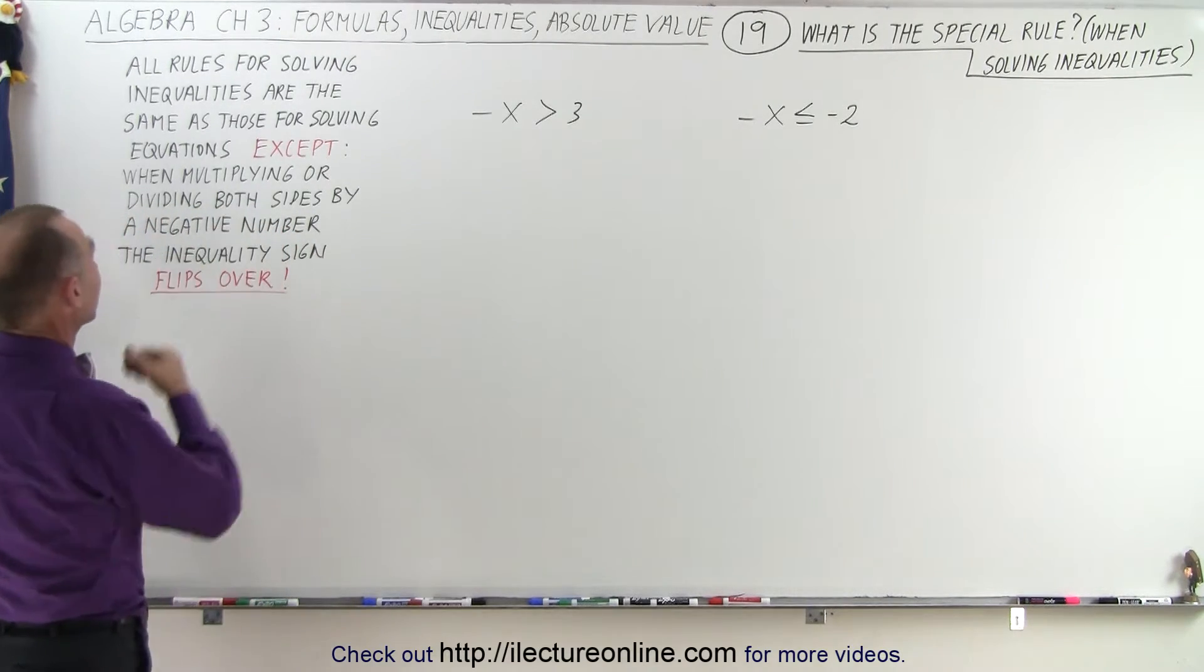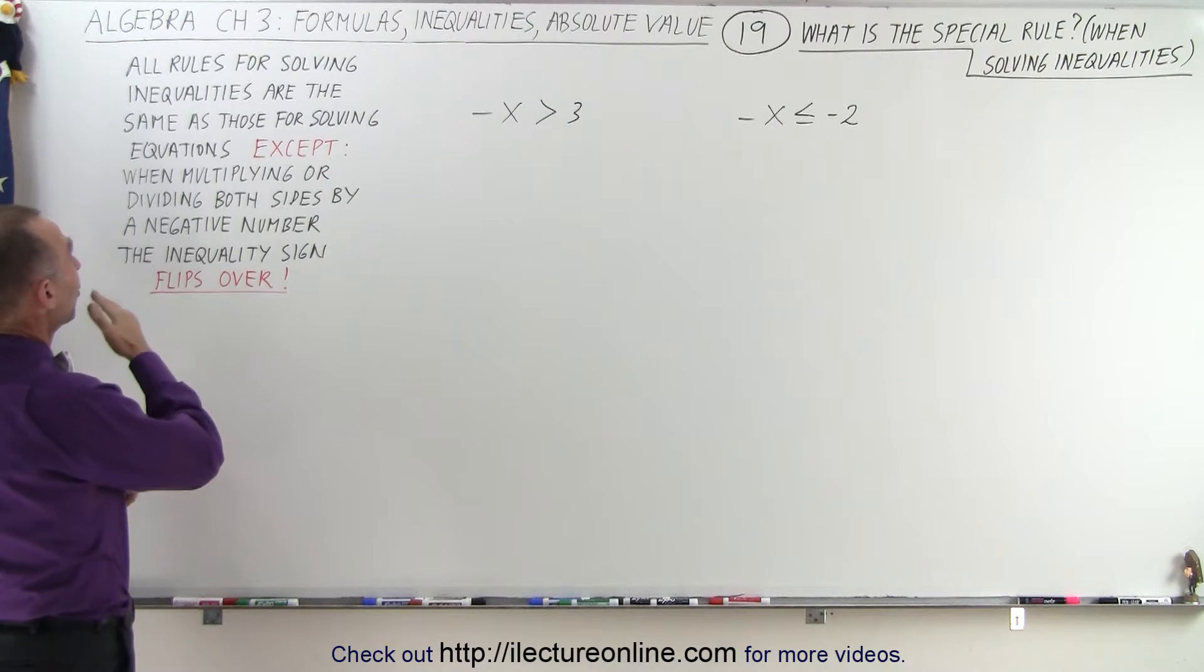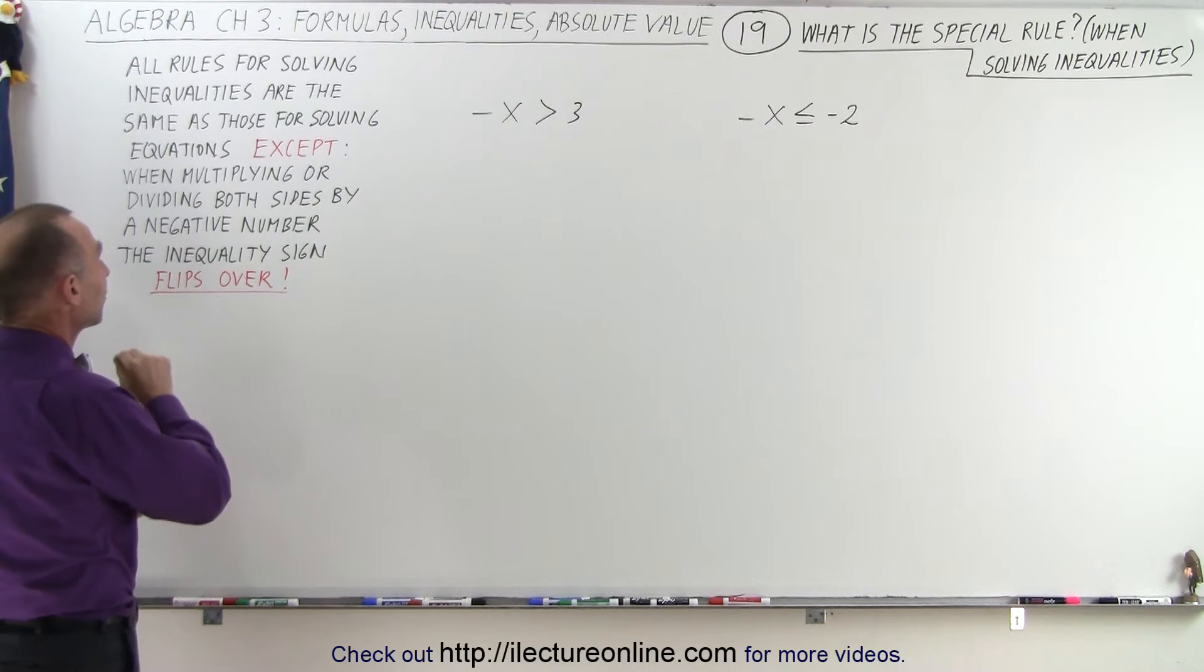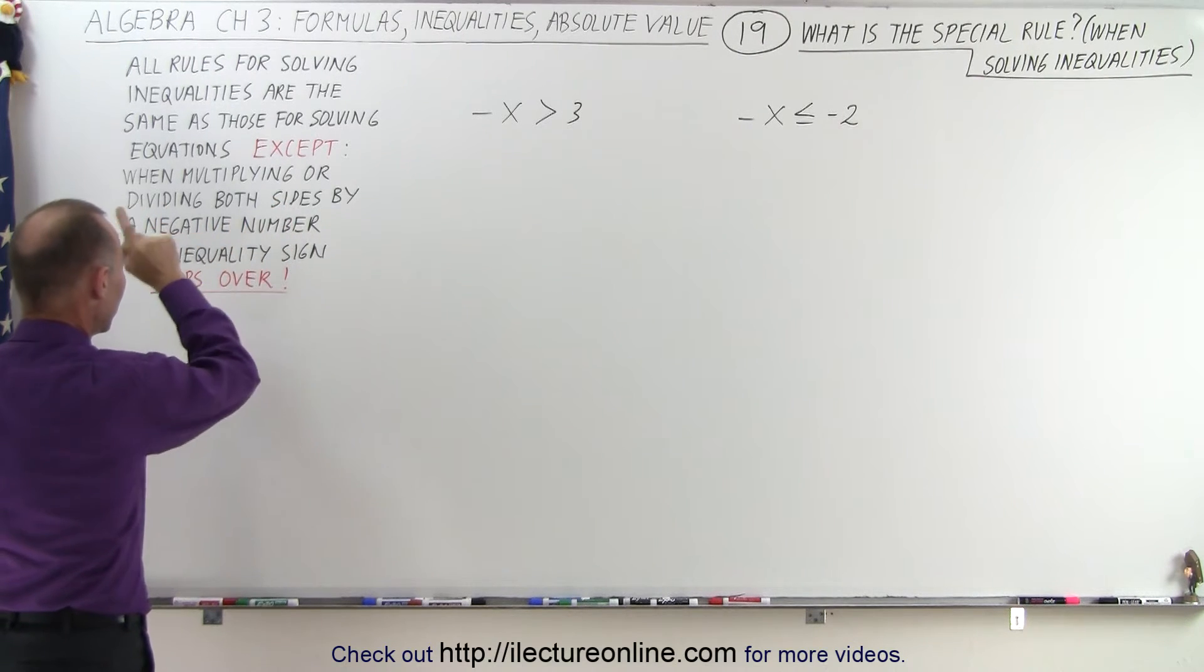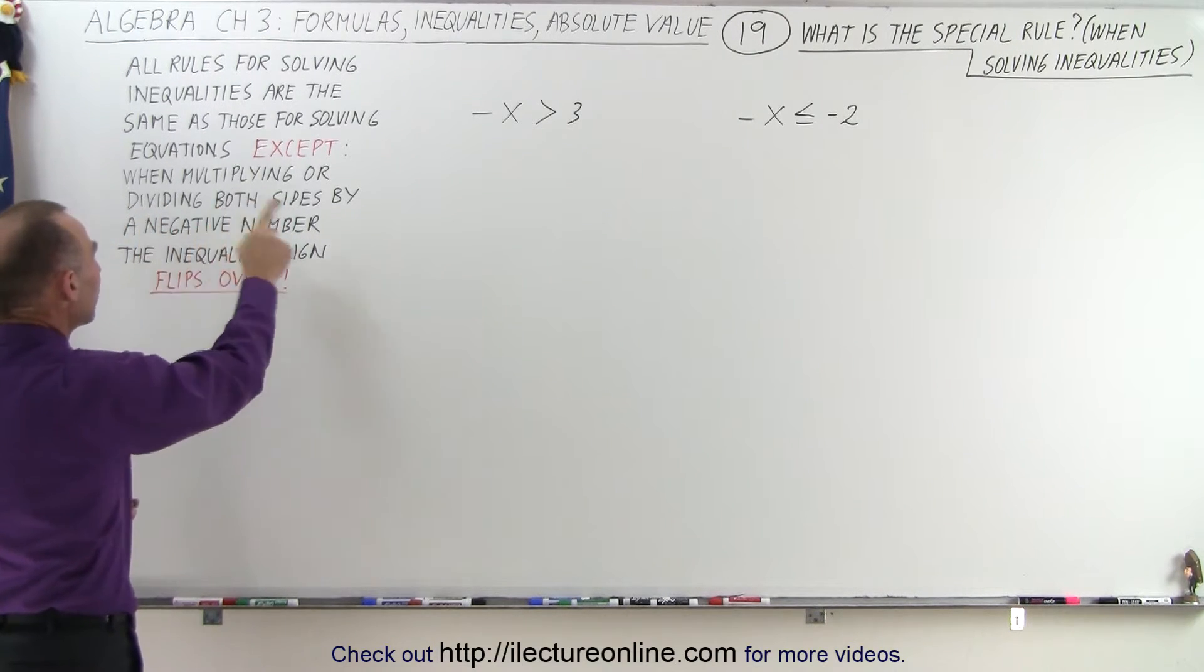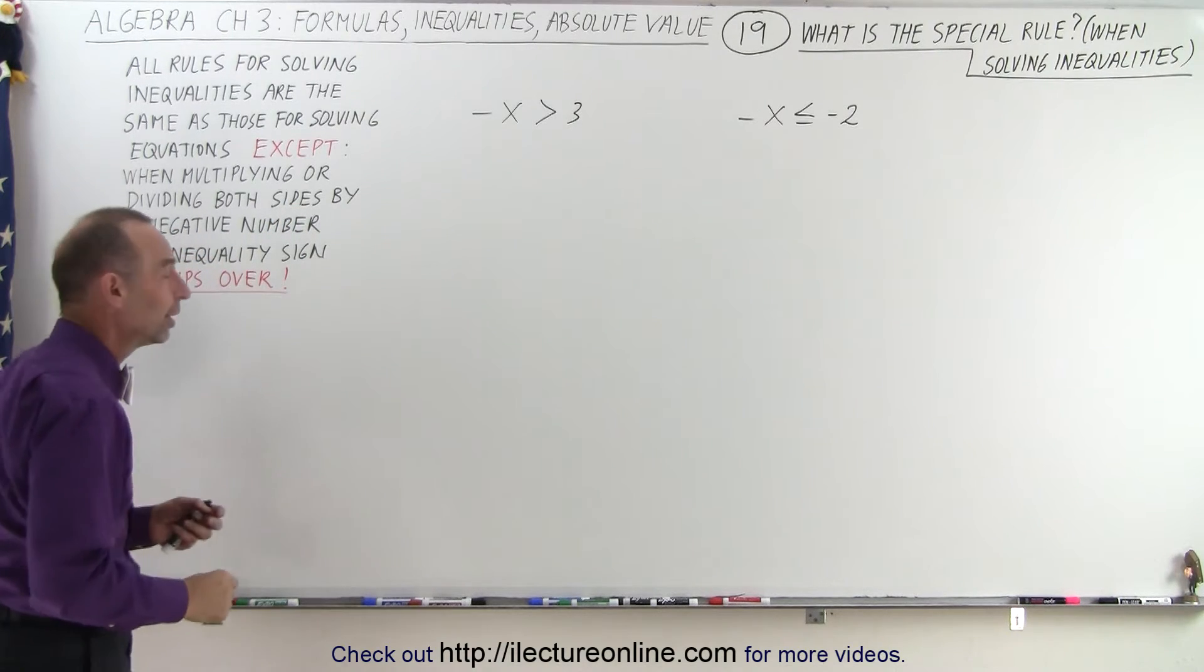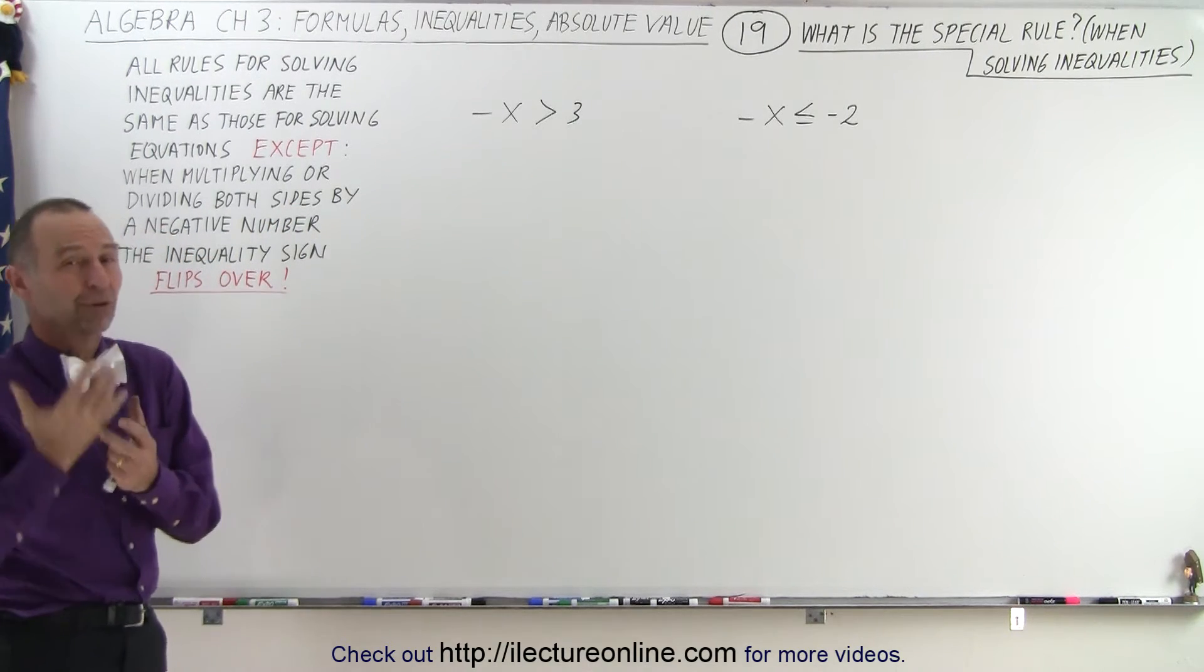Notice here what we've written. We said that all rules for solving inequalities are the same as those for solving equations except, in red letters, when multiplying or dividing both sides by a negative number, the inequality sign flips over.